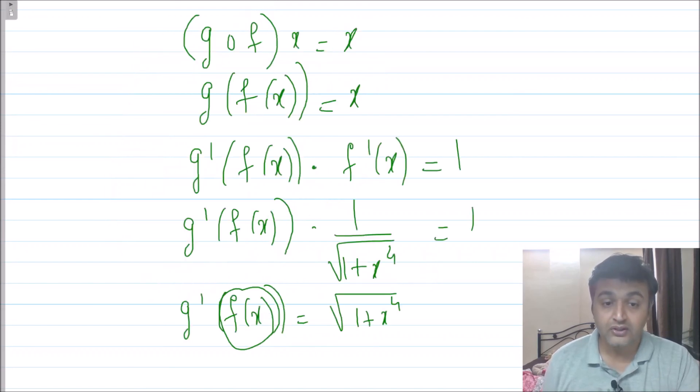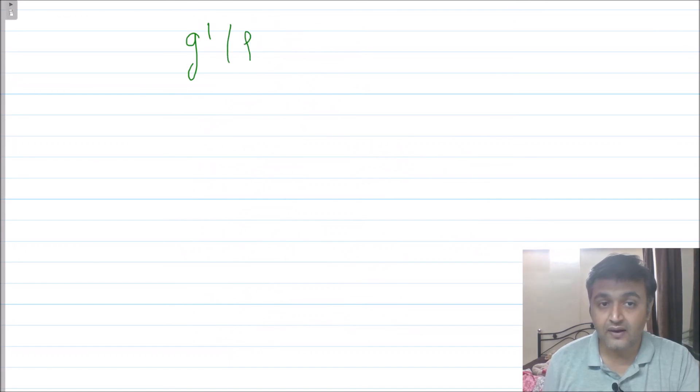So you put x equal to 2, and what you get is g dash of f of 2, which is root of 1 plus 2 raised to 4. Therefore, g dash of 0 is square root of 17.